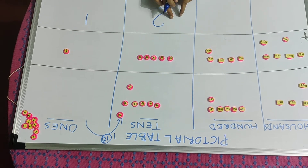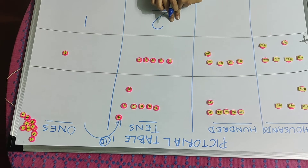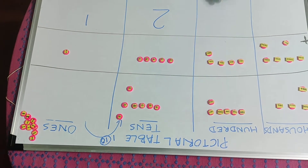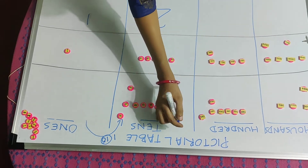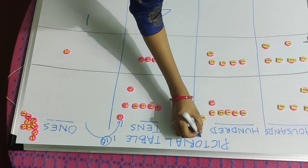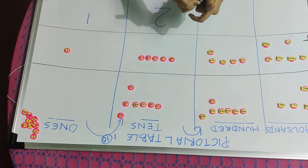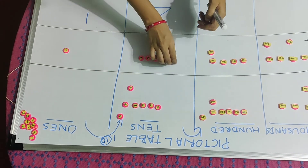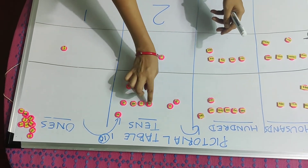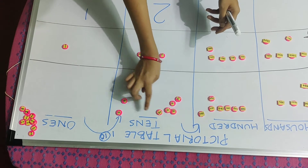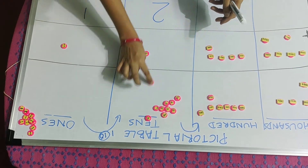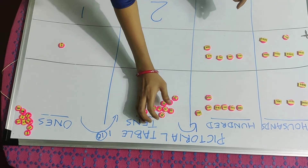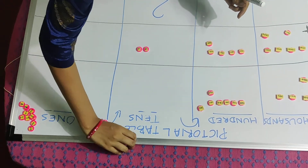What will I do? I will take ten times tens as carryover — ten times tens means one times hundred. So I am taking ten times tens from here and carrying it to the hundreds place. After removing ten, two dice are left in my tens place.